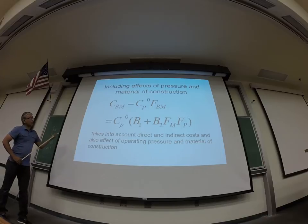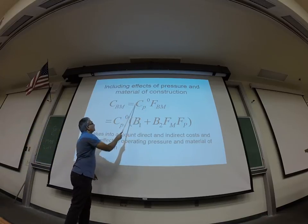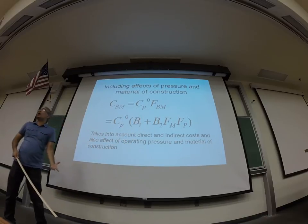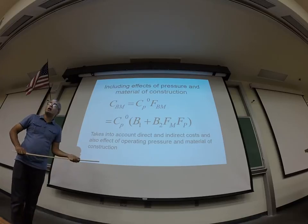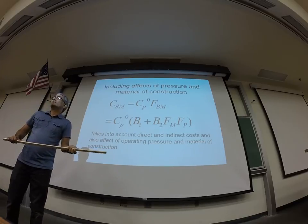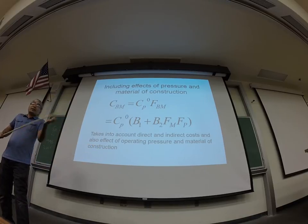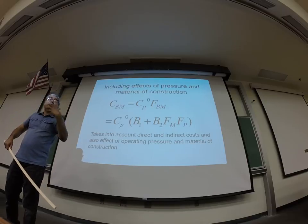Alright. So now, of course, what we really want is not just CP0. We already know CP0, but we don't really just want CP0. What do you want? You want the bare module cost. Right? Why do you want the bare module cost and not just CP0? Because it's the total cost. Because that's the real expenditure, right? You want to figure out, we're trying to cost the plant. We're trying to figure out how much money do you have to spend.